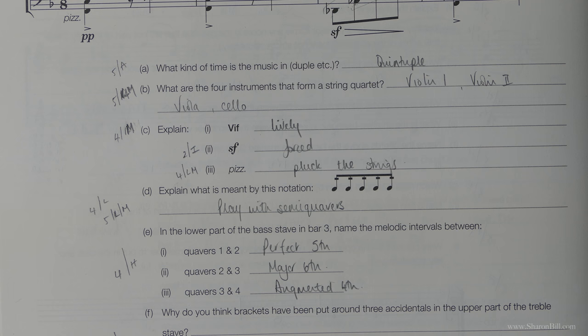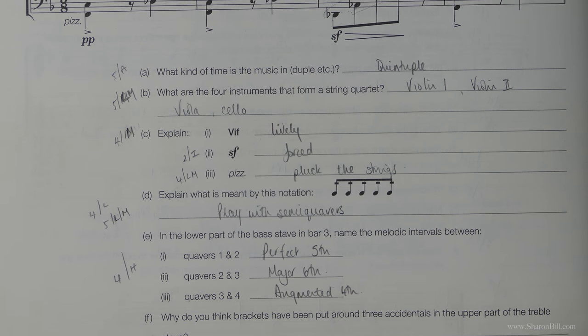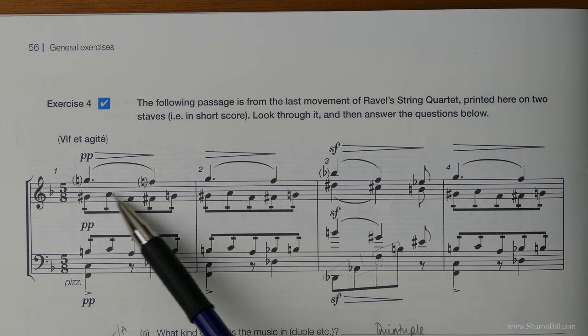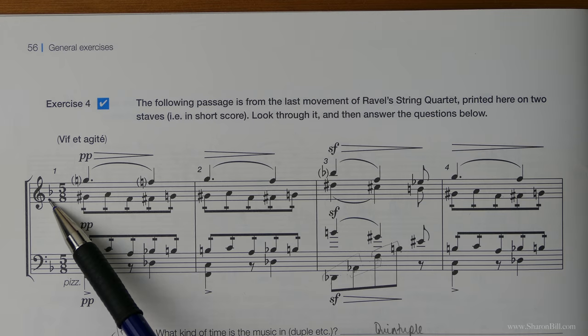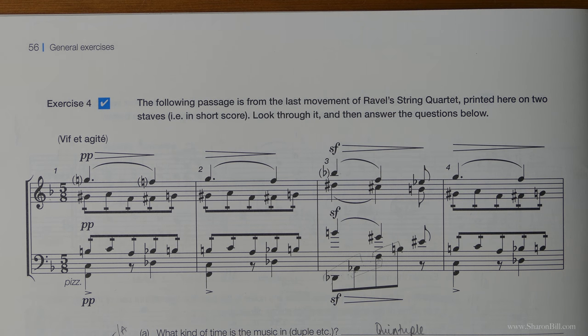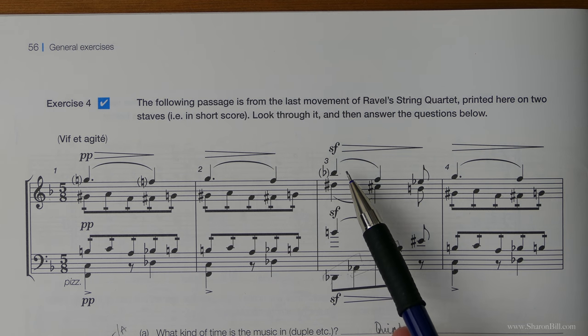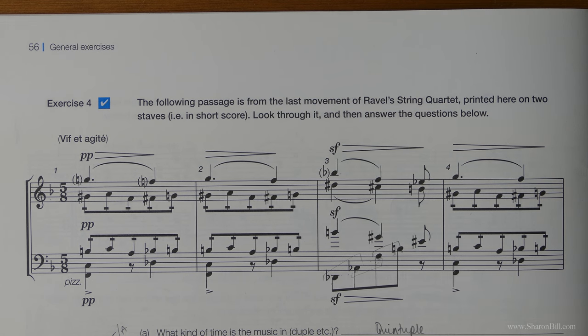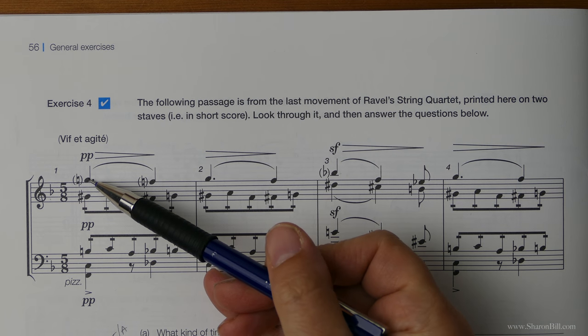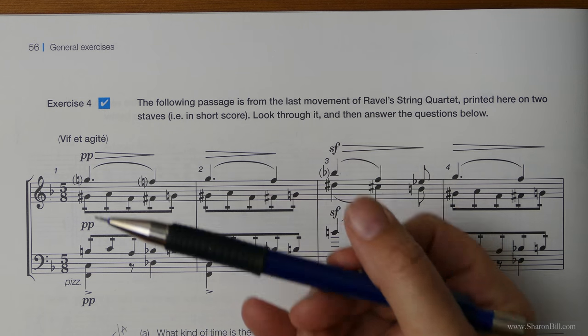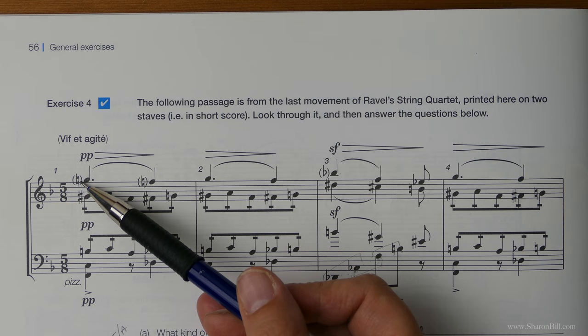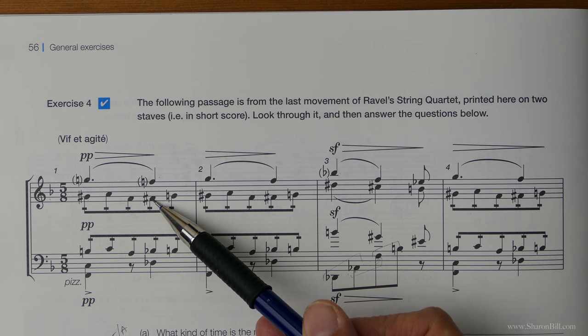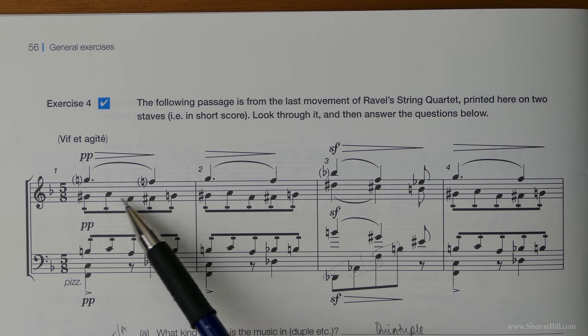Now why do you think brackets have been put around the three accidentals in the upper part of the treble? You'll notice that in each case, we've got a G natural and F natural, and then we've got a B flat, which is already part of the key. Each one of those is really quite redundant. They don't actually change the fact. There's no G sharps or G flats going on. It's just to reassure or remind the player in this upper string that they are definitely to be playing the G natural.